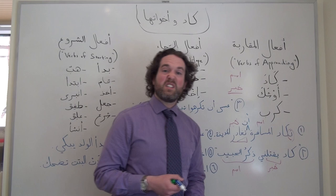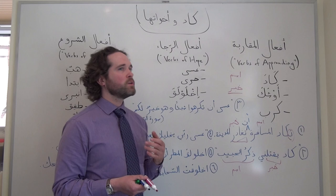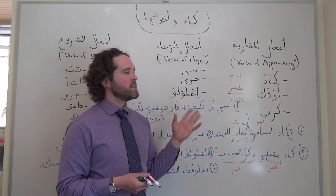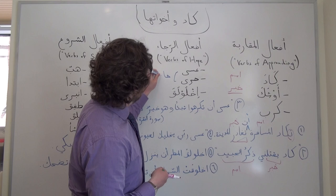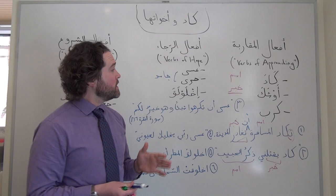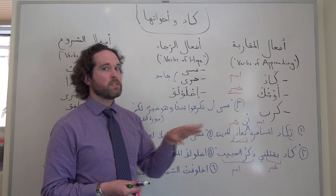Our second category is what we call أفعال الرجاء, which we might translate as verbs of hope or verbs of hoping. You can think of these as meaning something along the lines of 'hopefully.' The first two, عسى and حرى, are what we call جامد, meaning that they don't really conjugate for different subjects — they tend to stay the same, kind of like 'hopefully' in English, which we don't change depending on who is doing the action.